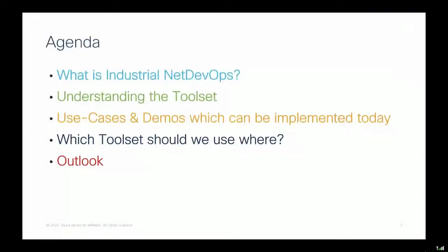Let's talk about the agenda, which is really packed. I'll start with what is exactly Industrial NetDevOps, then walk you through the tool sets — what is possible — and then through the use cases and demos which can be implemented today. We're not talking about roadmap items; you can start today. I'll also cover which tools to use and where, and then the outlook, because it's just the beginning.